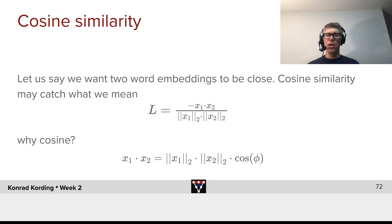In that case, we might define cosine similarity as minus x1·x2 divided by the two norms of those two vectors. Why is it called cosine similarity?